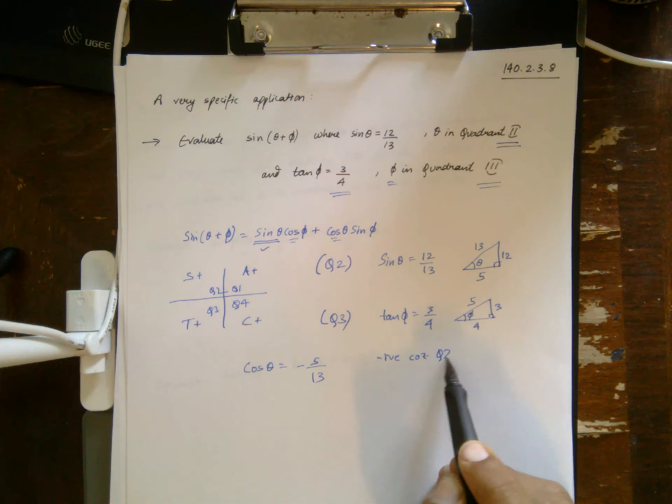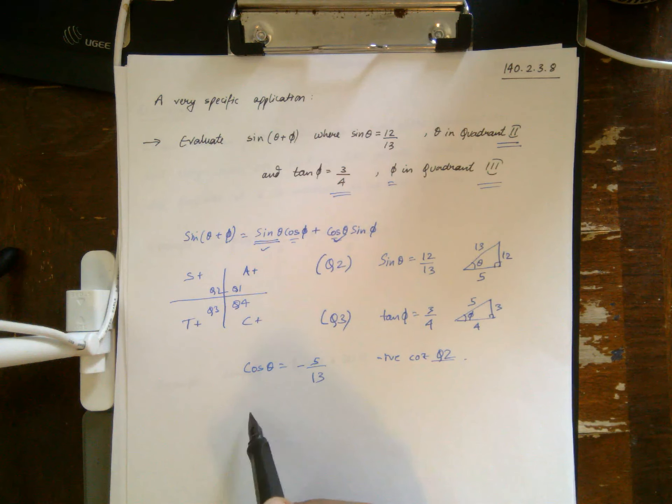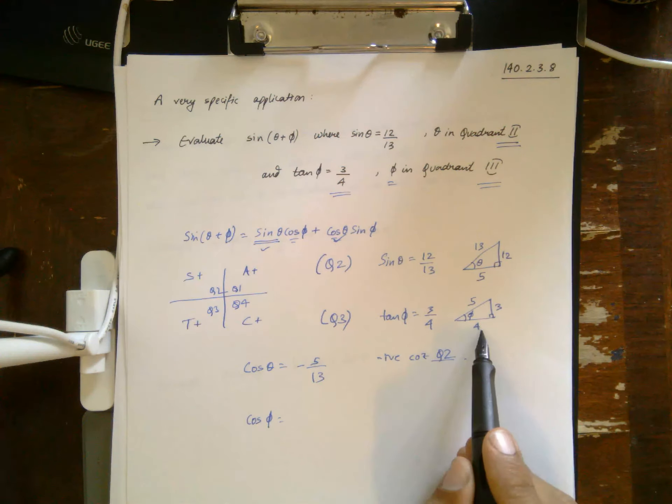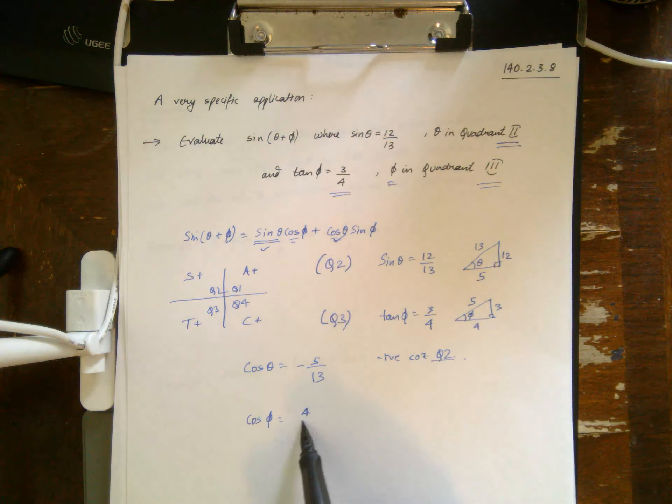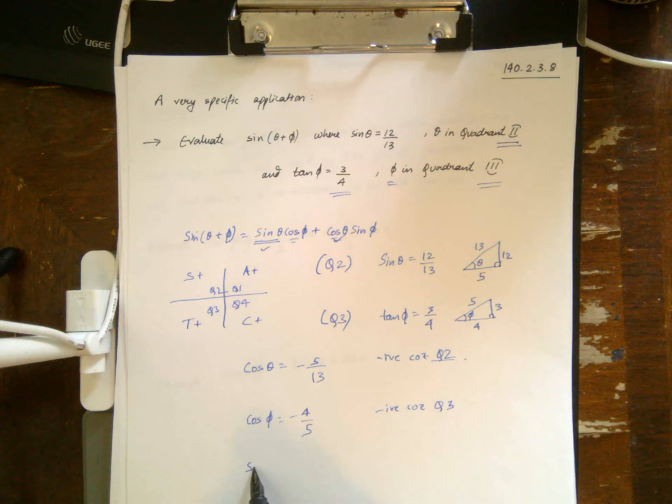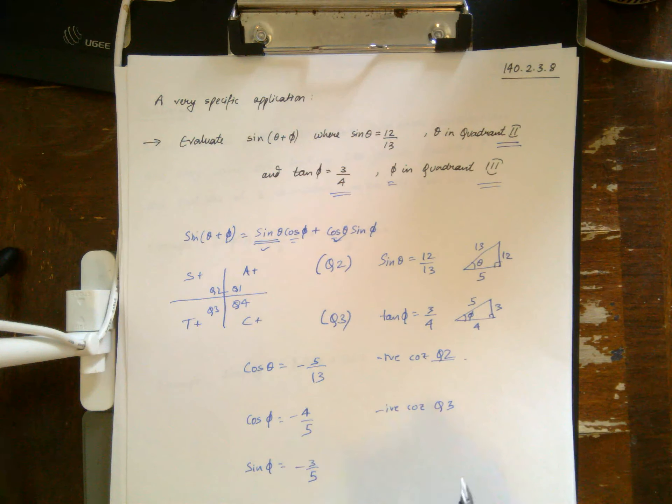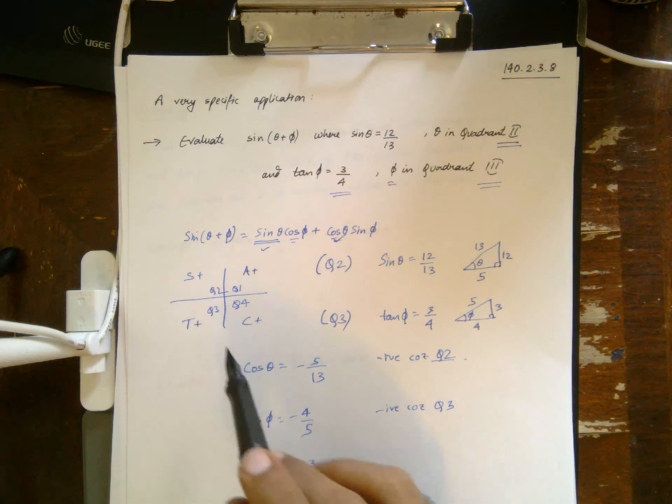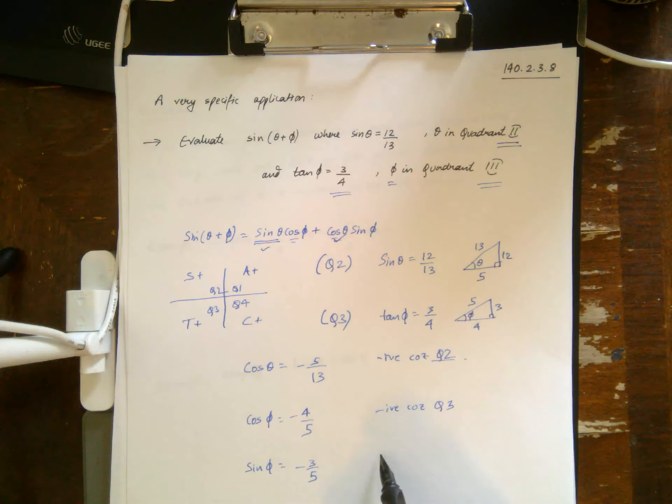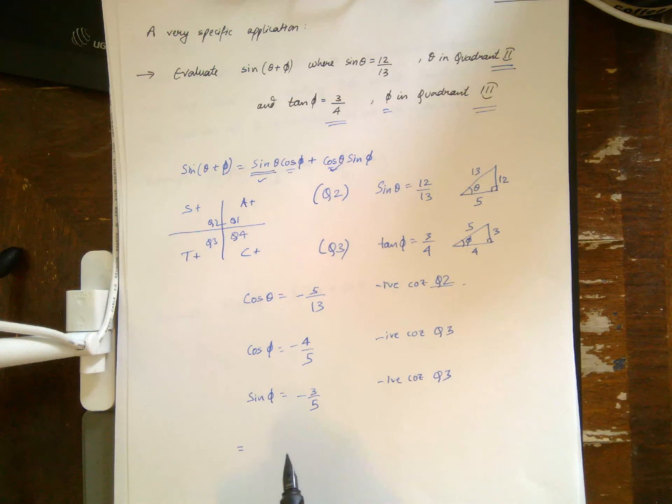So negative, quadrant 2, that gives me cosine theta. Now I need cosine phi, which is adjacent over hypotenuse in quadrant 3, which is also negative. And then lastly I need sine phi, which is opposite over hypotenuse, negative again, because in quadrant 3 only tangent is positive.